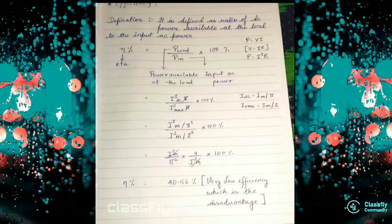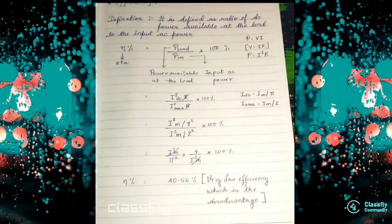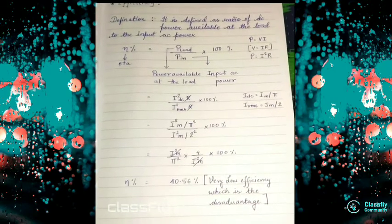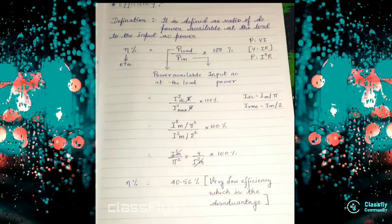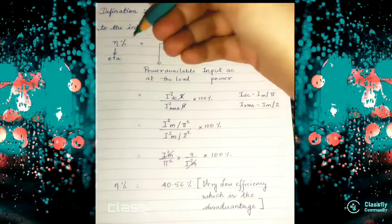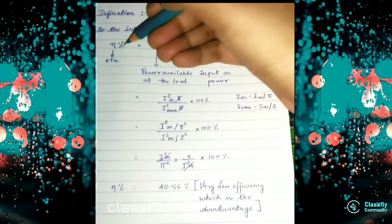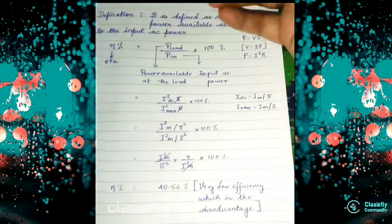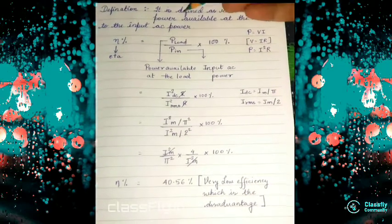First topic is efficiency. Definition: it is defined as the ratio of DC power available at the load to the input AC power. Efficiency is denoted by eta (η), and it is defined as the ratio of DC power.